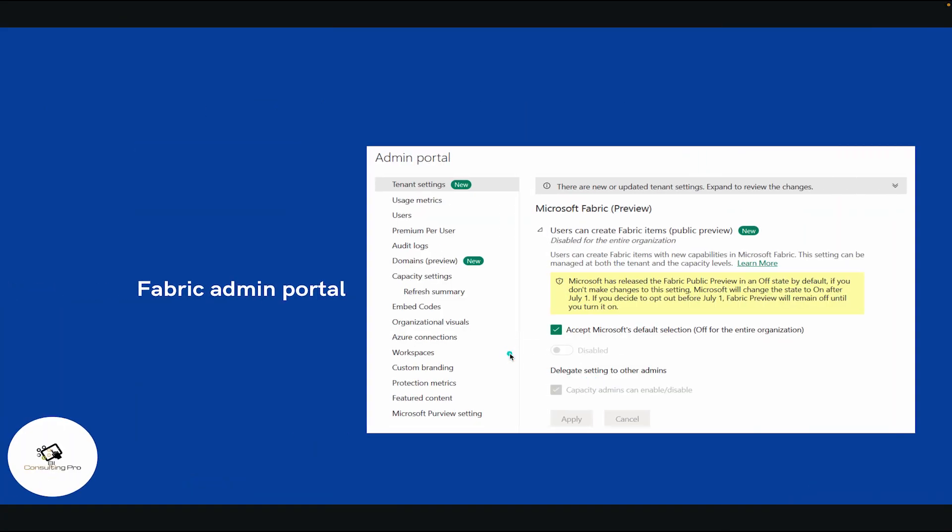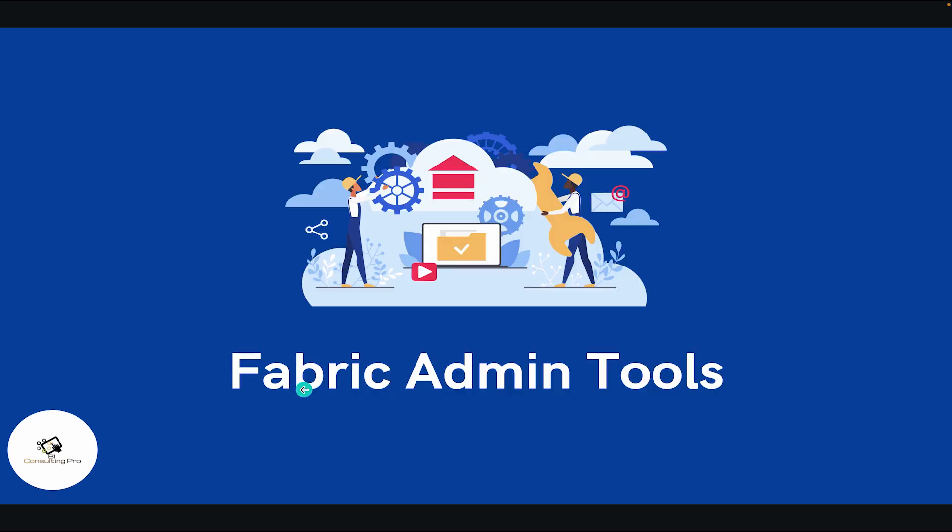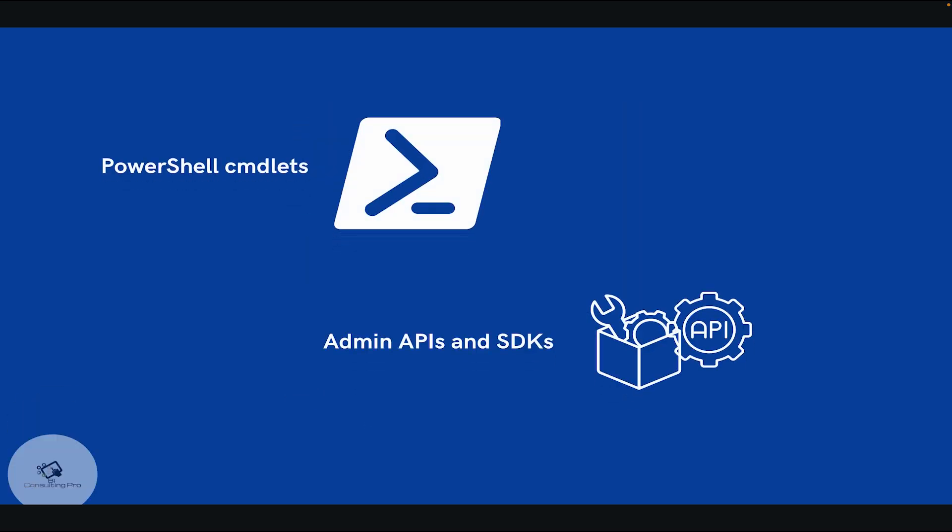The second admin tool is PowerShell. PowerShell cmdlets let you extract different audit data, create your own audit reports, assign users to roles, configure gateways or workspaces, and change dataset format from large to small or vice versa. The third tool is APIs and SDKs, which help you perform different operations on your tenant — for example, refreshing items using the different APIs. These two tools are very helpful for automating and managing Fabric operations.